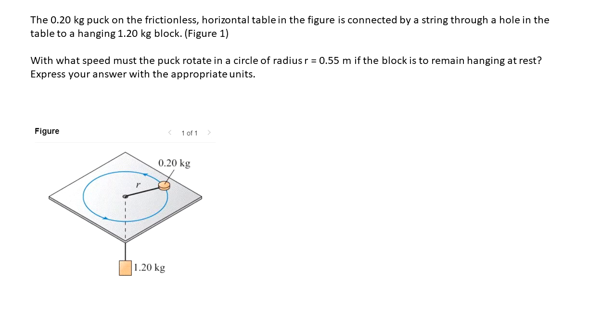We have a 0.2 kg puck on our frictionless horizontal table as shown in the figure. It is connected through a string to a hanging block of 1.2 kg.